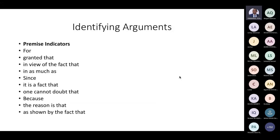Premise indicator words include: 'for,' 'granted that,' 'in view of the fact that,' 'inasmuch as,' 'since,' 'it is a fact that,' 'one cannot doubt that,' 'because,' 'the reason is that' — which is the most explicit — and 'as shown by the fact that.' These are premise indicators; they tell you you are looking at a premise.